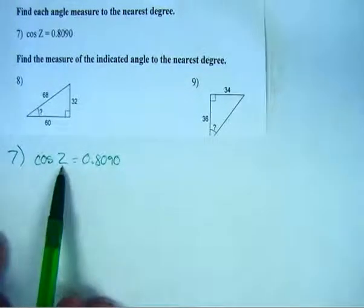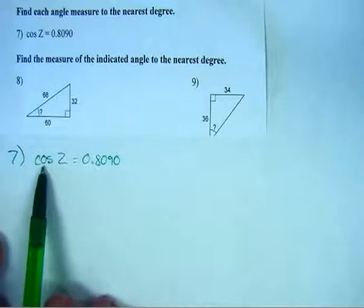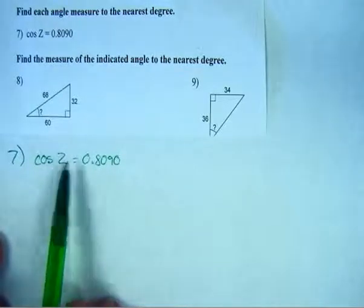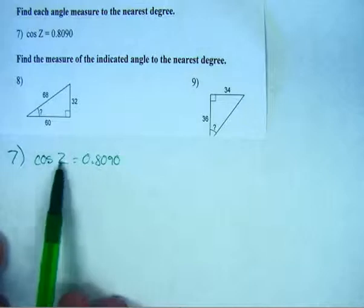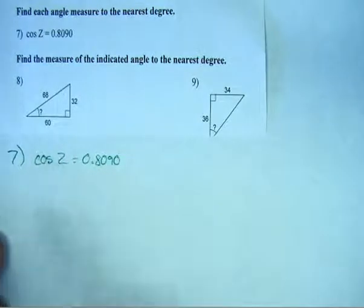So in order to find out what z is, we have to undo the fact that we're taking the cosine of z. Cosine is a function. It's something we're doing to z to get this value. So we need to undo doing the cosine of z.